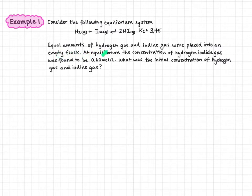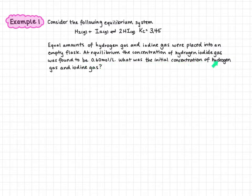If equal amounts of hydrogen gas and iodine gas were placed into an empty flask, at equilibrium the concentration of hydrogen iodide gas was found to be 0.60 moles per liter. What was the initial concentration of hydrogen gas and iodine gas? Our first step is going to be to write an ice table.